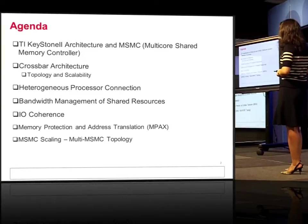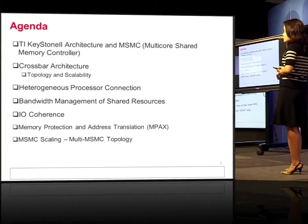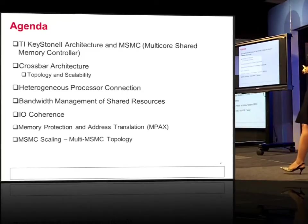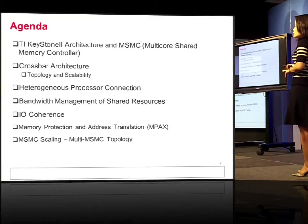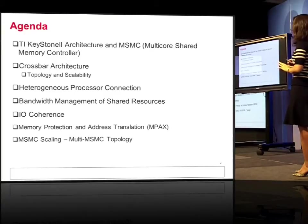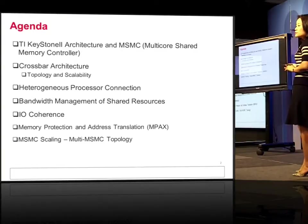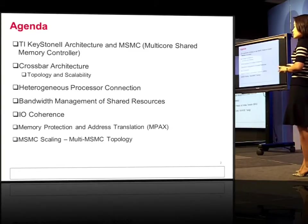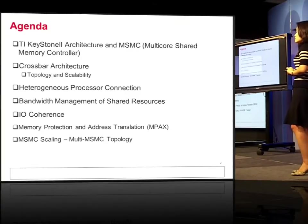Memory protection and address translation address the multiple-core challenge. ARM supports a 40-bit address space, but our traditional DSP and system masters can only address 32-bit. So MISMIC — multi-core shared memory controller — steps in to do this translation, aliasing, and virtualization to make different cores work on the same platform and see all the available address space.